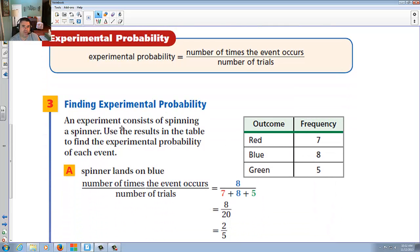Finding experimental probability. An experiment consists of spinning a spinner. And again, they say that here you hit red seven times, blue eight, green five. If you add all three up, you had basically 20 spins and you landed on eight. You landed on blue eight times out of 20. You take eight over 20 or two-fifths of the time or 40% of the time you landed on blue.